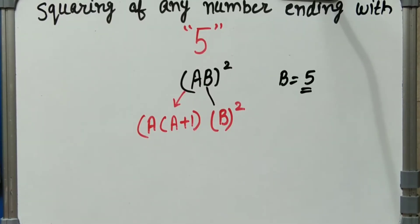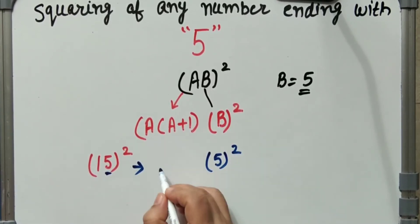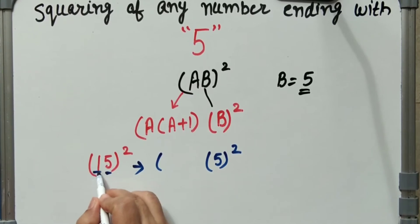So we will take now first example. Let us suppose 15 square. According to our formula we will do firstly 5 square. Here the number A is equal to 1, where A equals 1 and B equals 5.